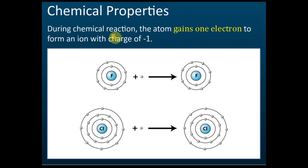When Group 17 elements react with other elements, what happens? Group 17 elements have seven valence electrons. Is a shell filled with seven valence electrons stable or not stable? Not stable — because only if they have eight electrons is it considered stable. We call that the octet, which we will discuss in the next chapter. Seven valence electrons is not stable.